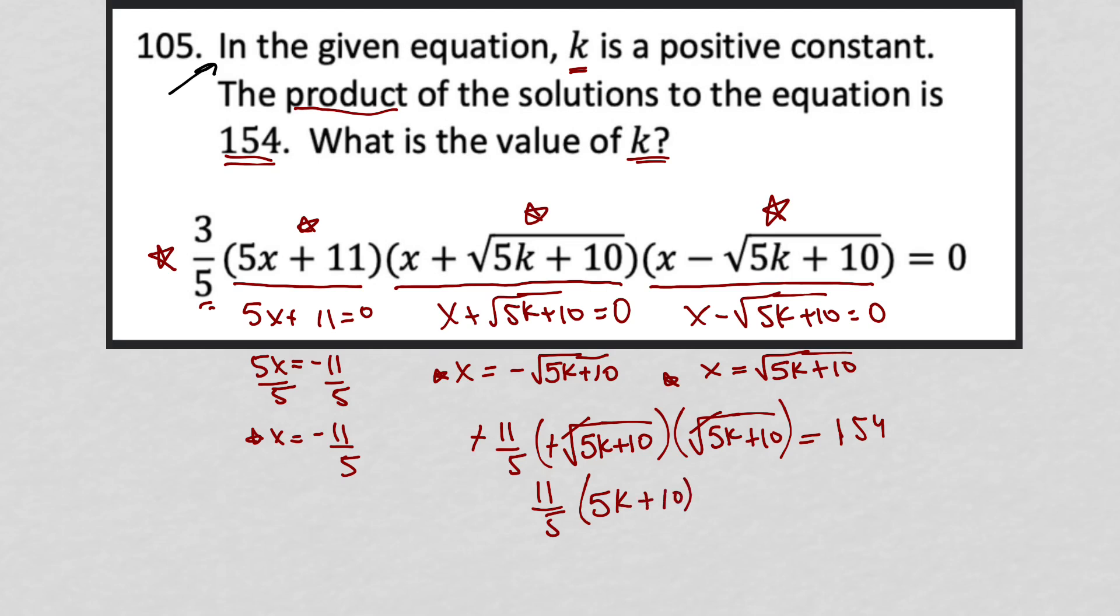I'm going to simplify this now. I'll say 11 times 5k plus 10 all over 5, which means that this 5 can divide into. Actually, I'm going to simplify this 5k plus 10.